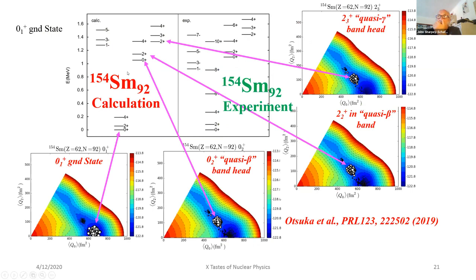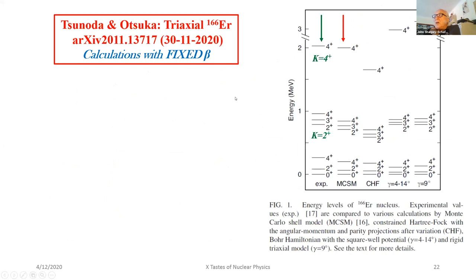The example he shows is samarium-154. The ground state has many samples and is almost axially symmetric. The first excited 0+ state — in my view the pairing isomer — is very triaxial, as is the 2+ state above it in the beta band. The K=2 gamma band head also has a triaxial shape. So you can start with an axially symmetric ground state and end up with triaxial excited states.